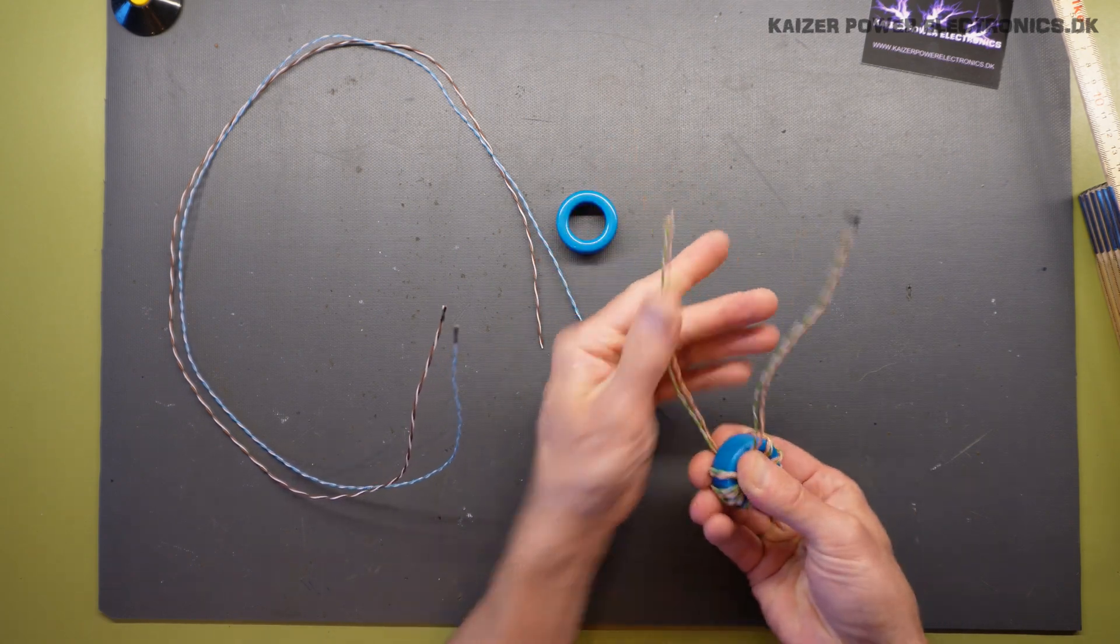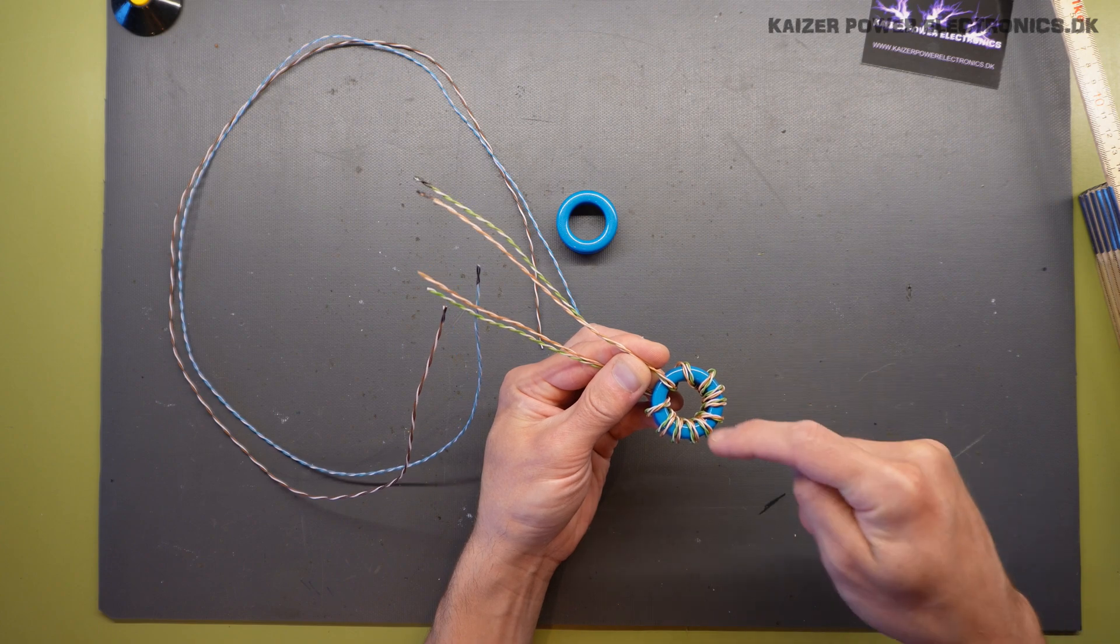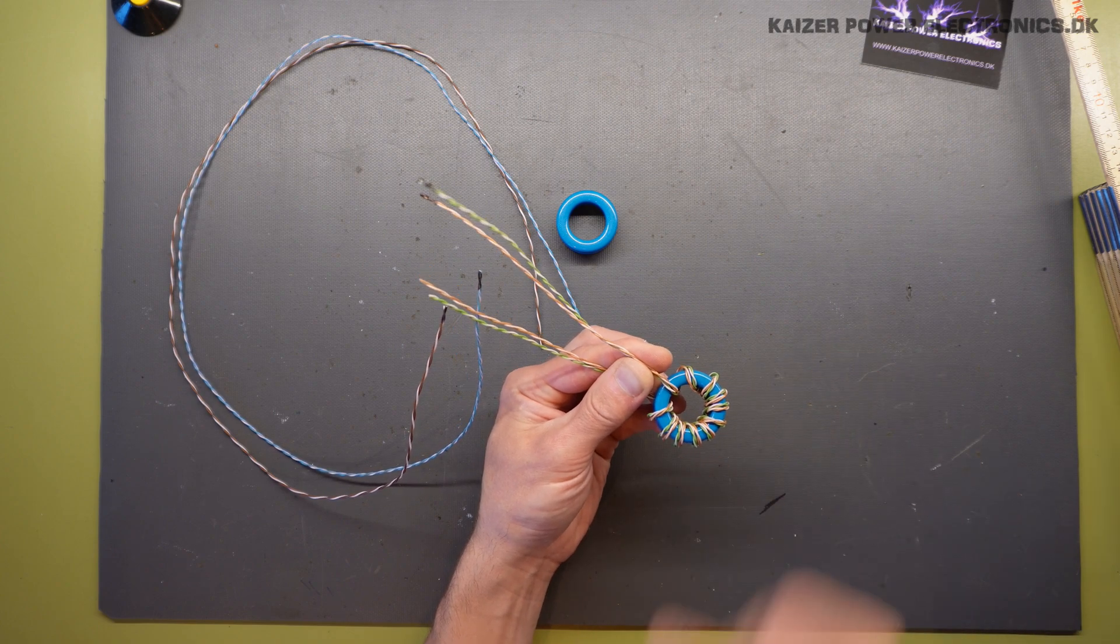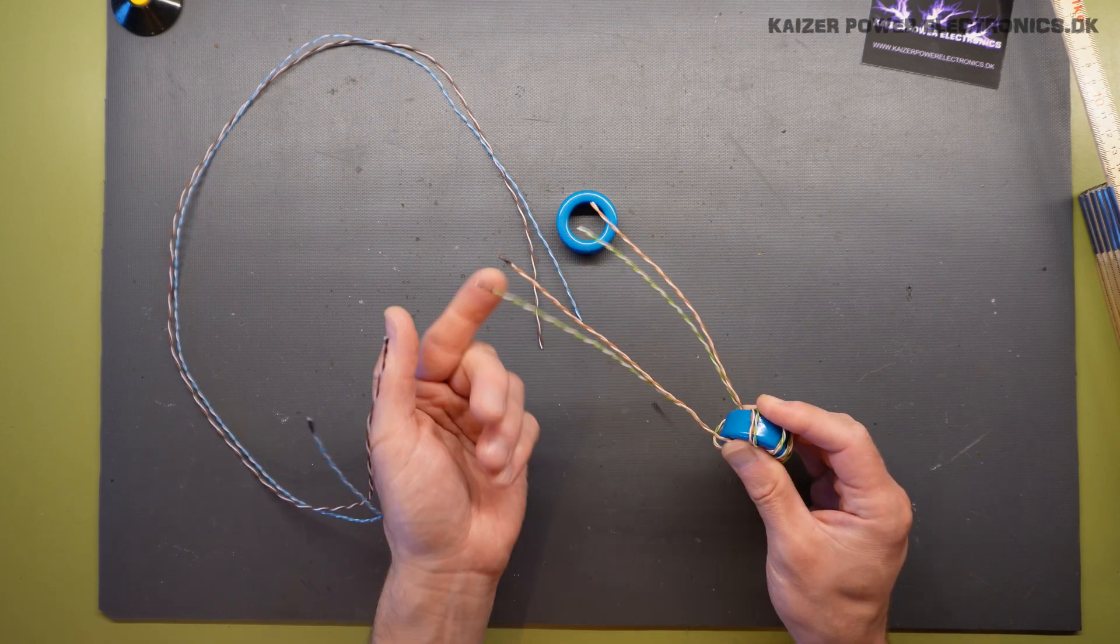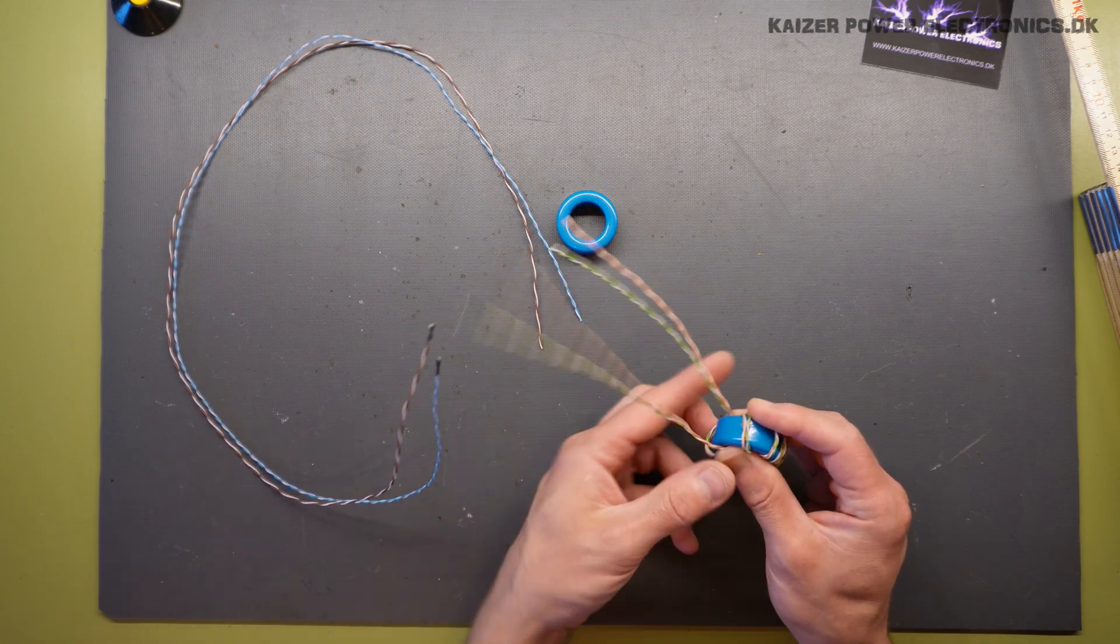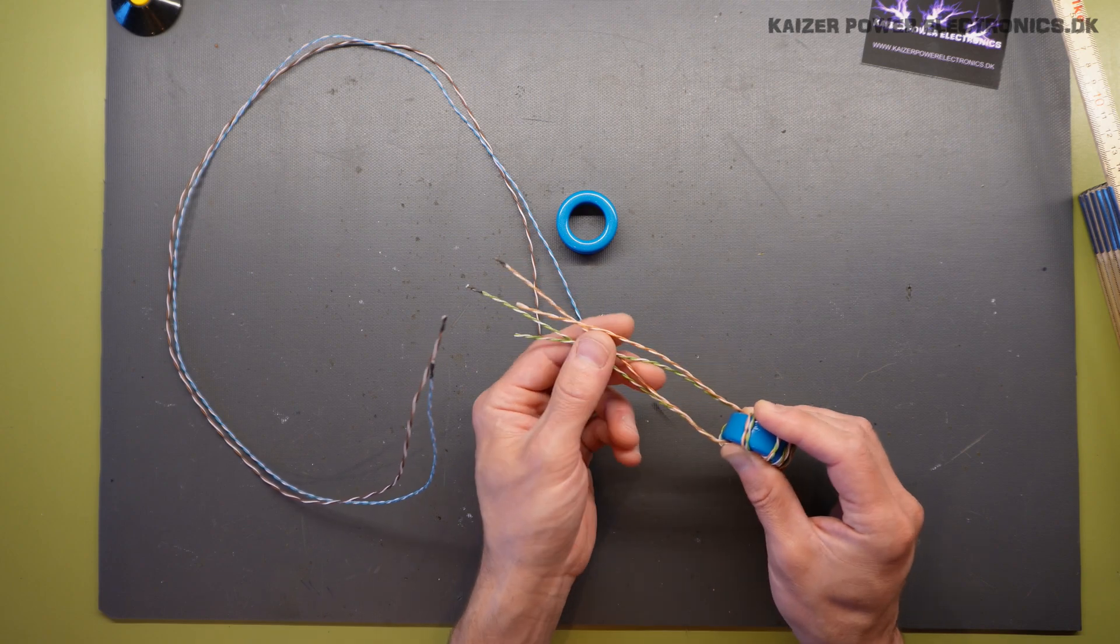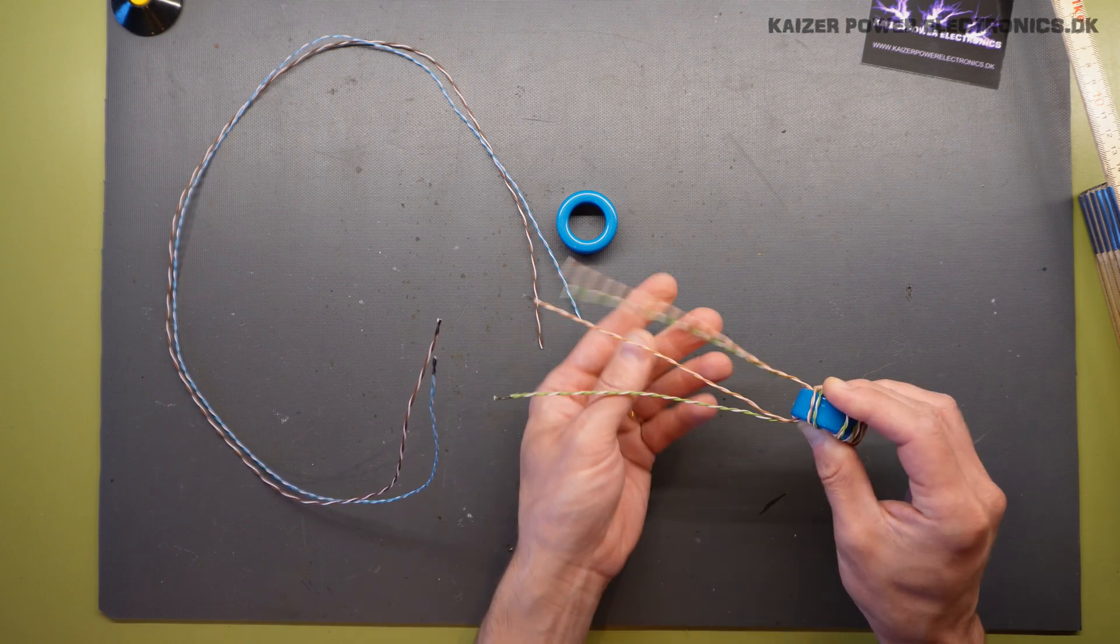So here we have it. 1, 2, 3, 4, 5, 6, 7, 8, 9, 10. 10 turns. And then we'll just unwind the twisted pair here. And then wind them back into each their respectable color pairs.